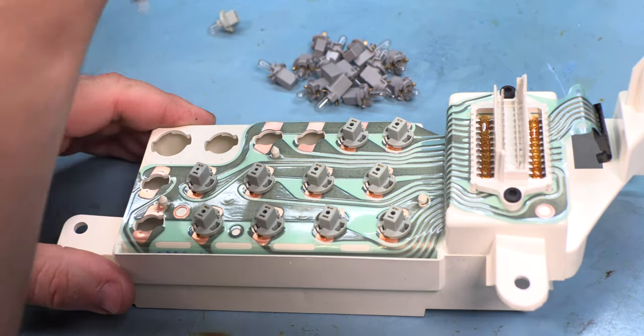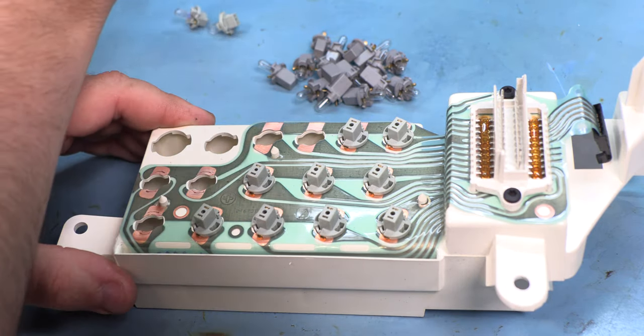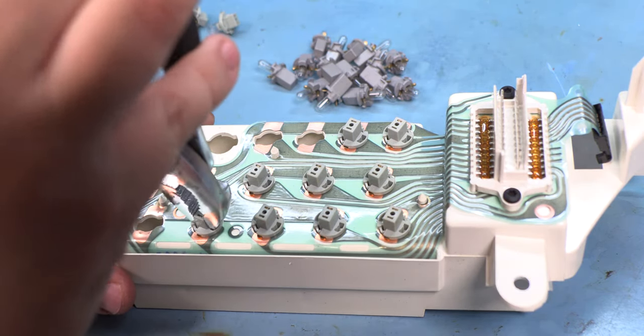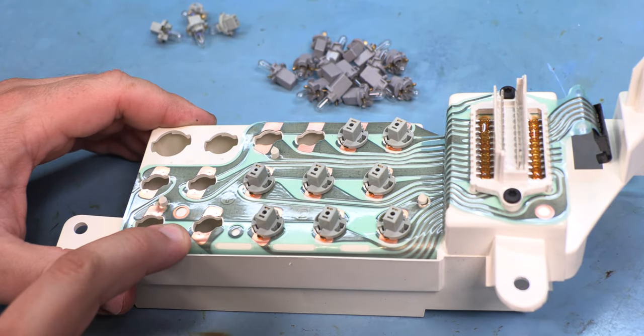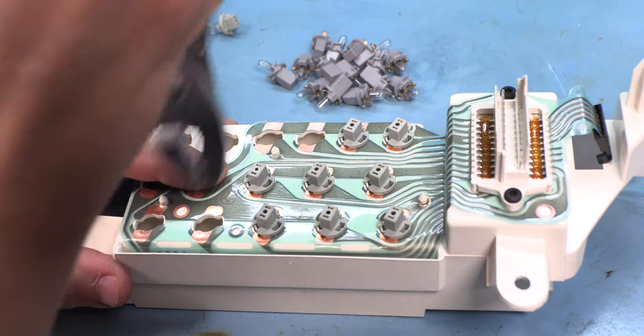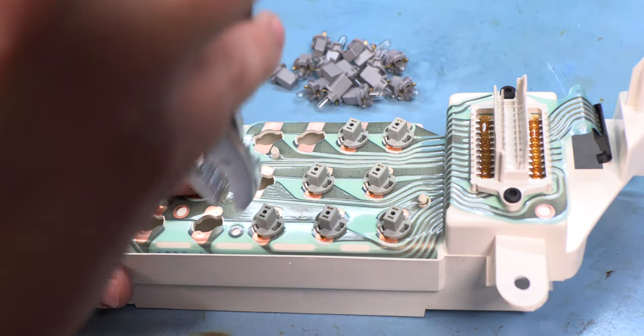We'll turn the bulbs about 1/16th of a turn counterclockwise. And we'll lift them out. We want to be very gentle with these because they are riding against this flex circuit board, and it's fairly easy to tear this if we're not careful.